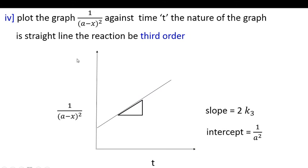For the third order reaction, plot 1/(a−x)² versus time t. If a straight line is obtained, the slope equals 2k₃ and the intercept equals 1/a².